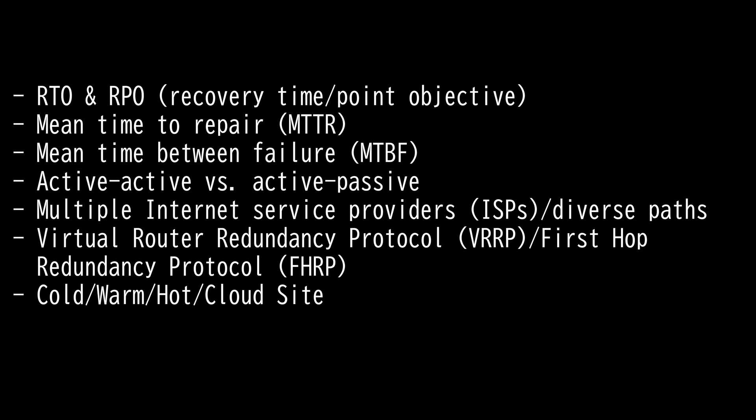Beyond this time, the break in business continuity is considered to affect the business negatively. RPO, or Recovery Point Objective, is the maximum time in which transactions could be lost from a major incident — essentially how much data you're willing to walk away from in order to get everything up and running again. Both RTO and RPO have to be balanced when coming up with policy for how to deal with incidents.